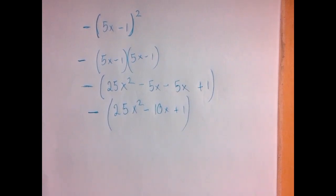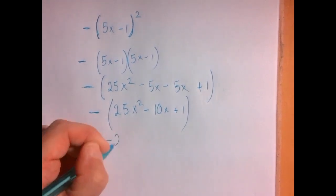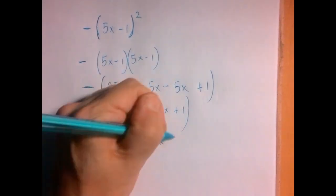And now we're going to distribute the negative 1, so that means that all three of these signs will change. We will have negative 25x squared plus 10x minus 1.